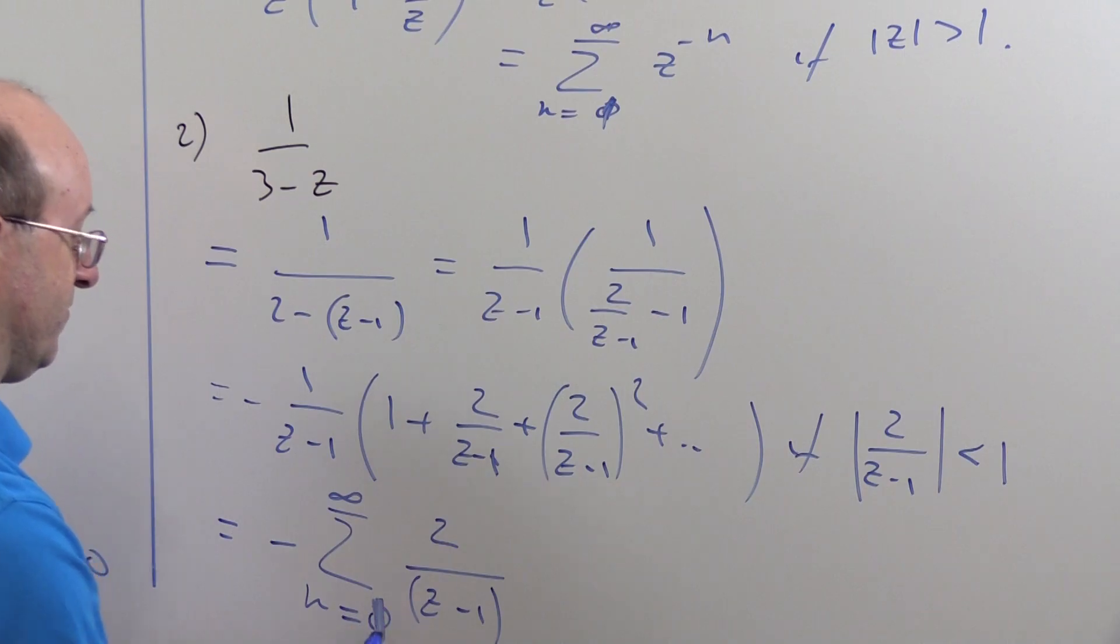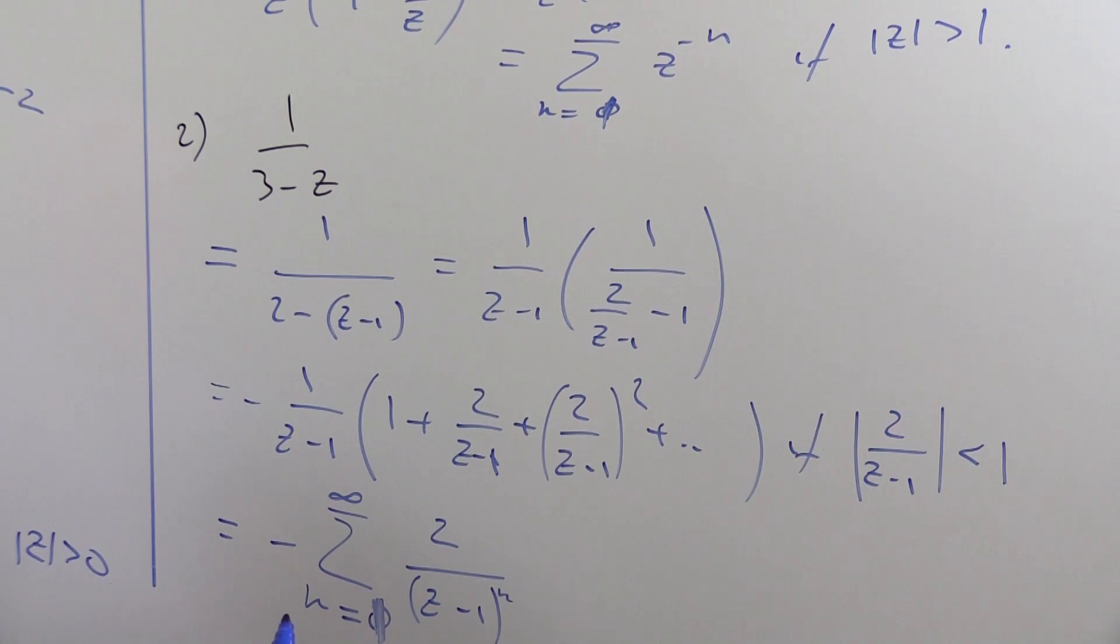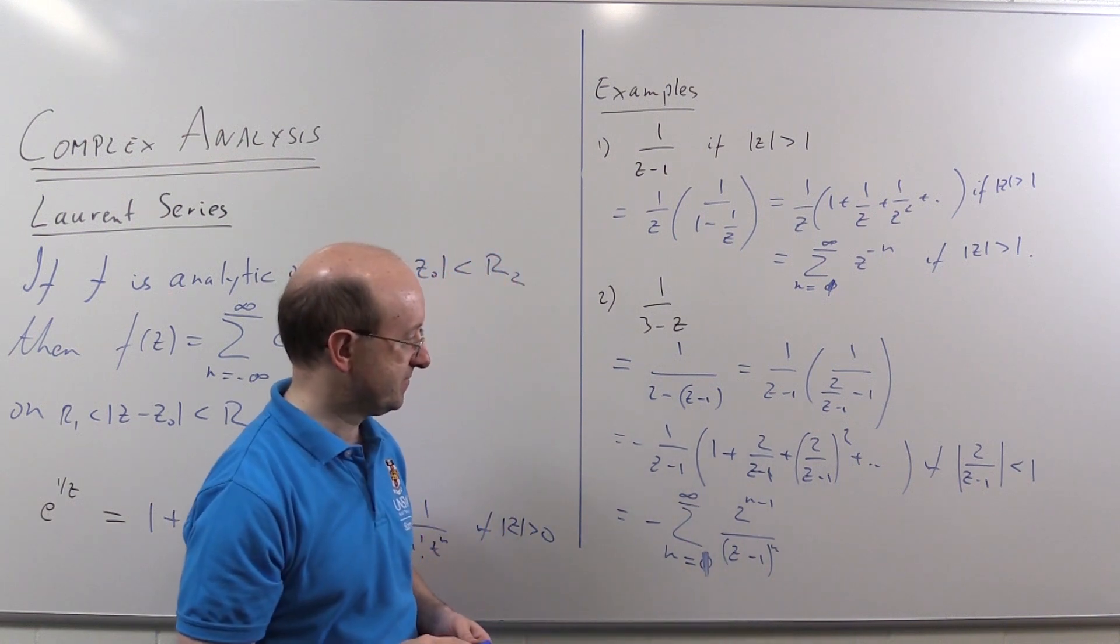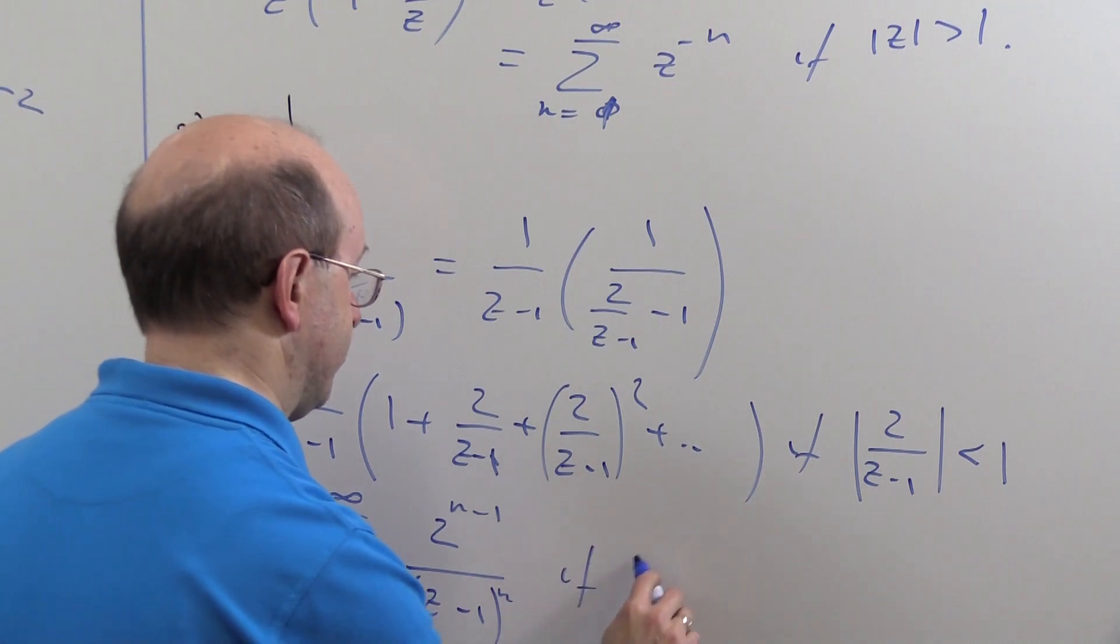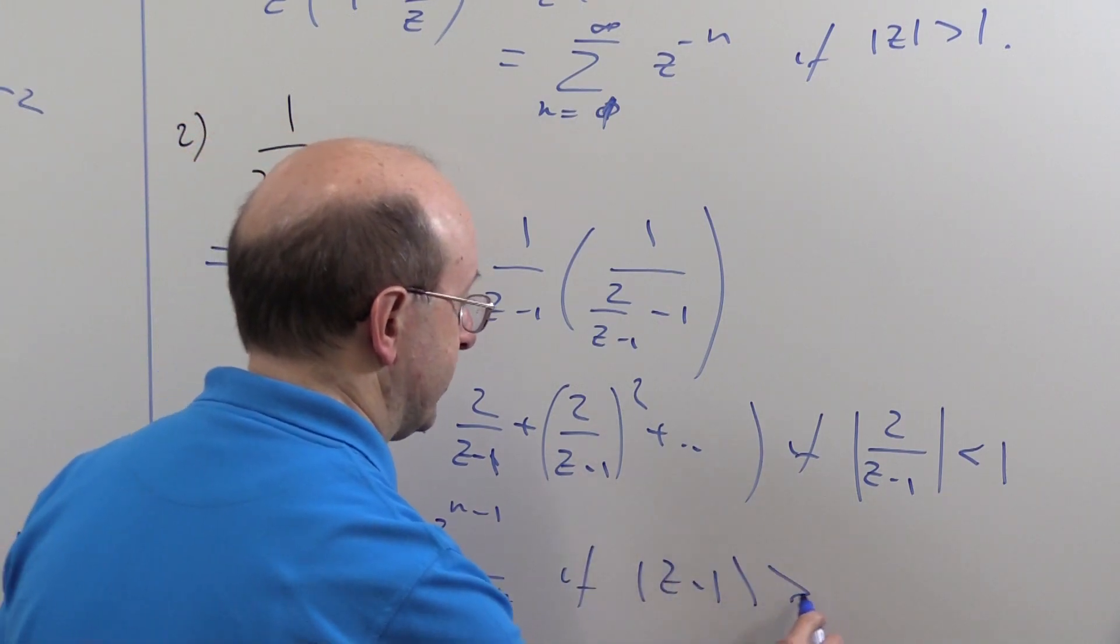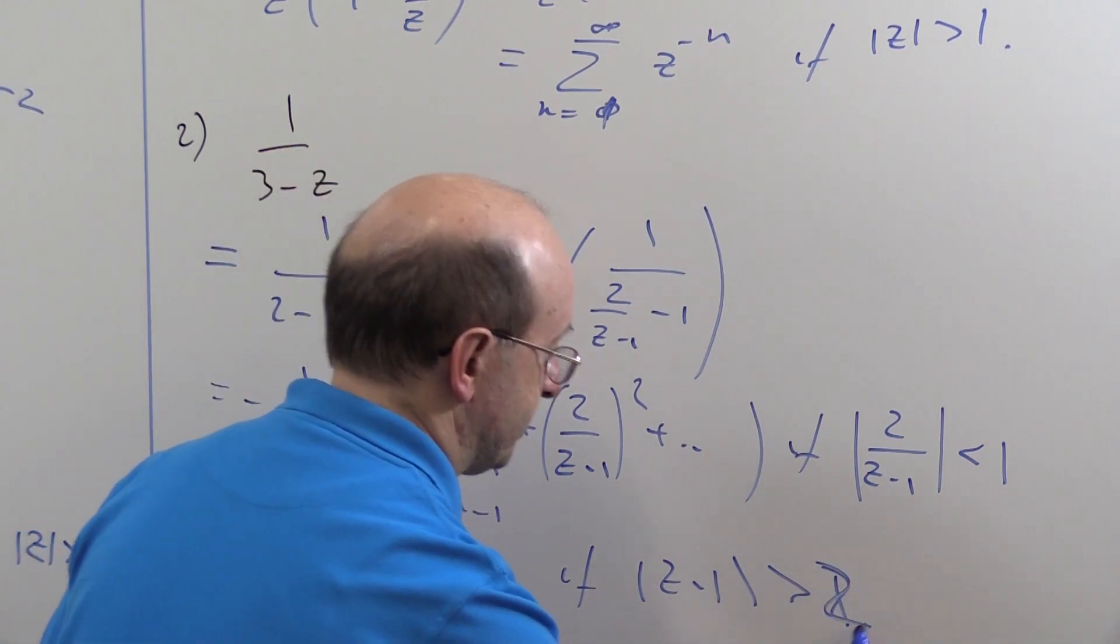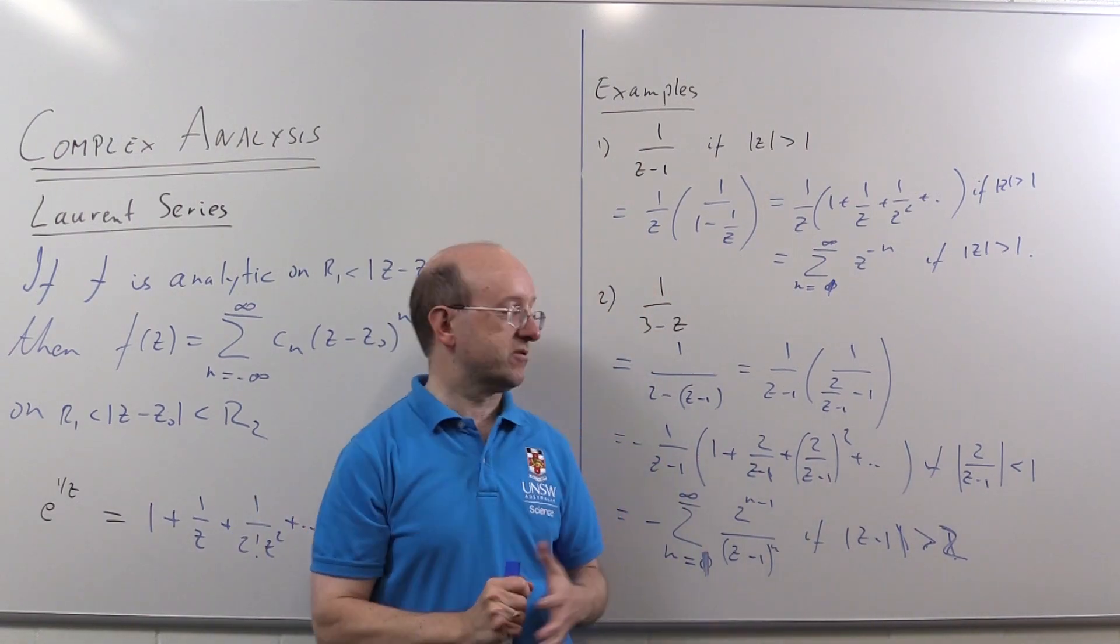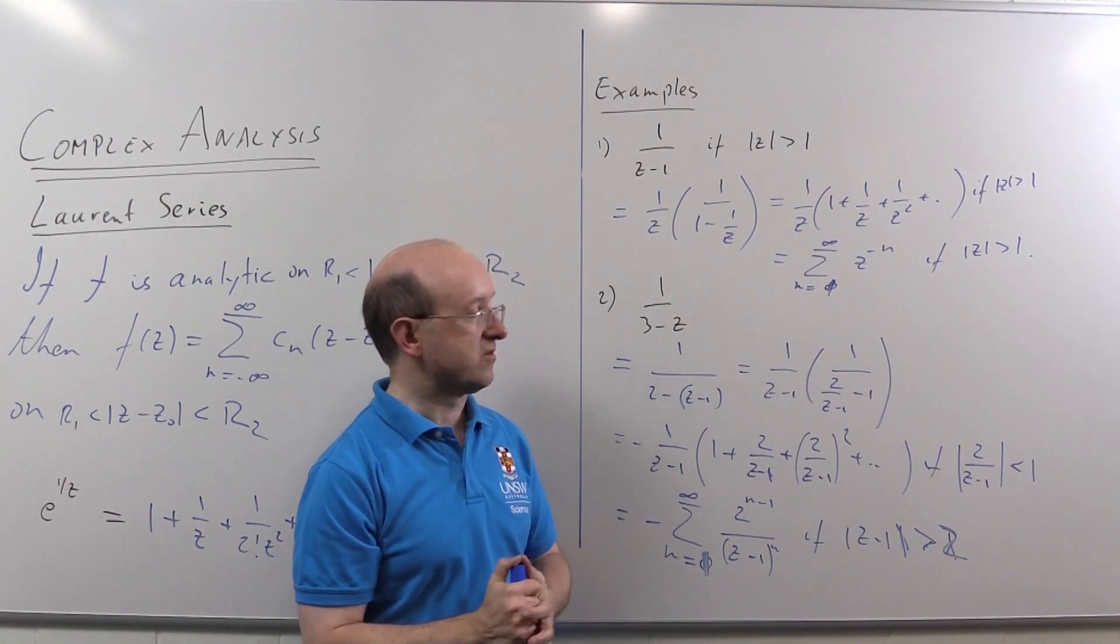We actually want one again, so we'll have n here, and in fact it'll be one less than that for the power of two on the denominator. If you look, that's right if |z minus one| is bigger than two, sorry. So that's how one would do Laurent series for rational functions.